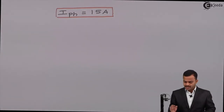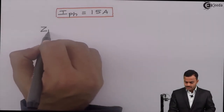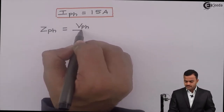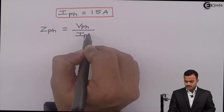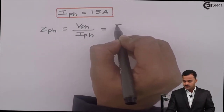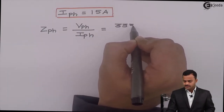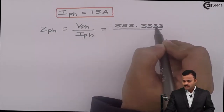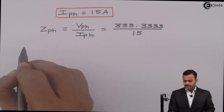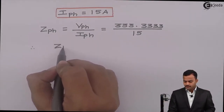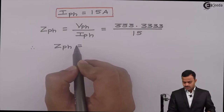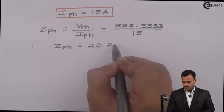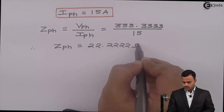Now we can get the magnitude of ZPH. ZPH = VPH / IPH = 333.3333 / 15 = 22.2222 ohm.